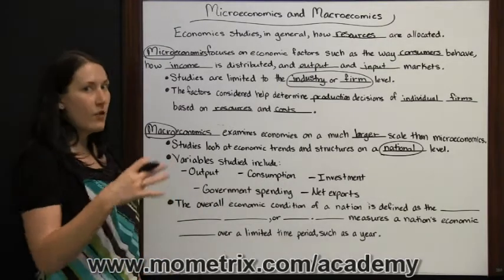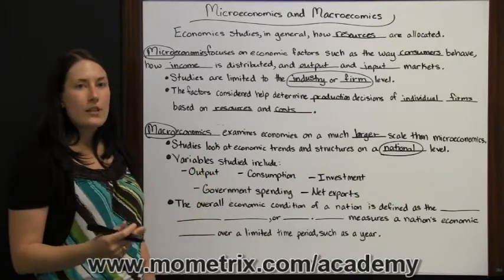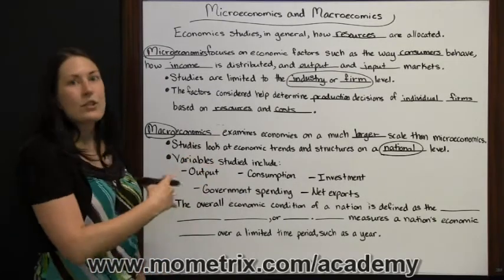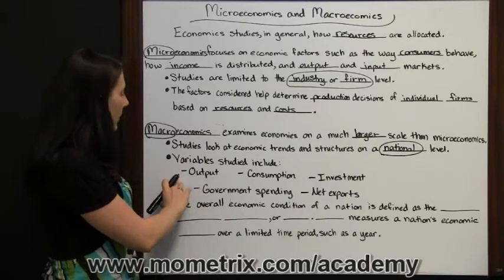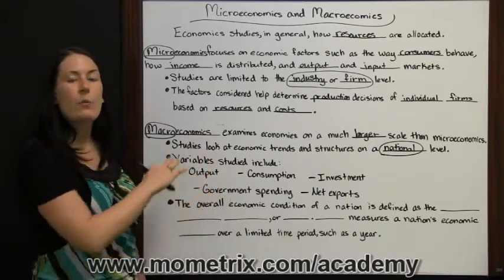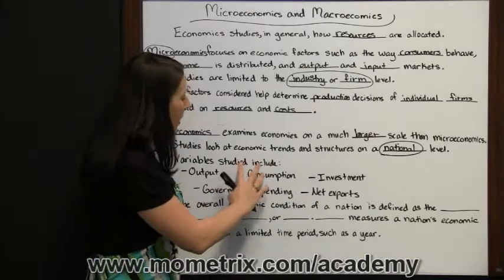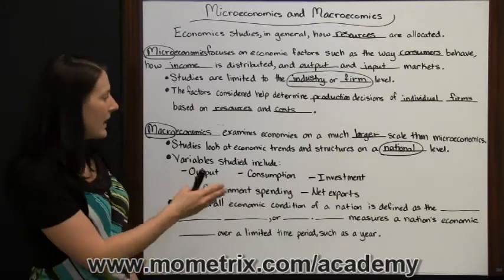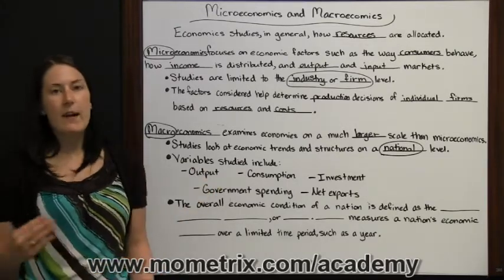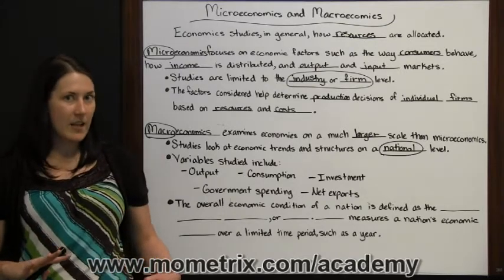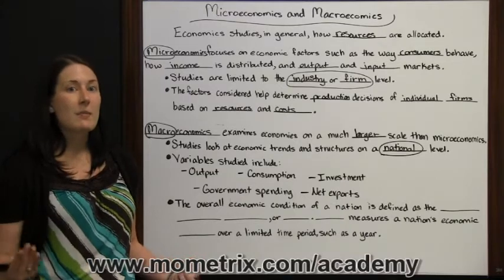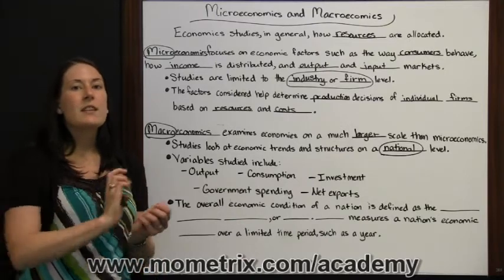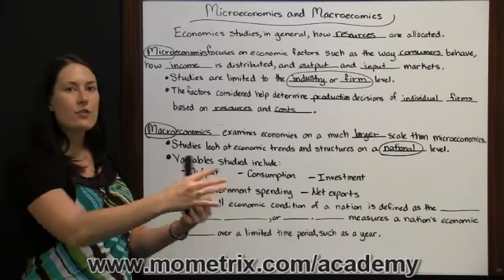They look at output of the whole nation and consumption of the whole nation — what are they putting out and what are they actually consuming? All the industries, all the consumers, all the producers — what are they able to put out? What are consumers actually consuming and how much is actually being purchased and used? Investment and government spending — how much is the government having to spend to keep markets stabilized, or are they spending too much and making markets inflated? Then, net exports — how much are we actually producing that we get to ship out of the country and make an external profit on?